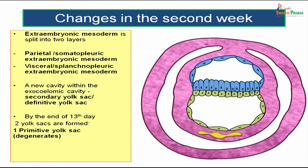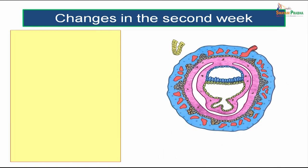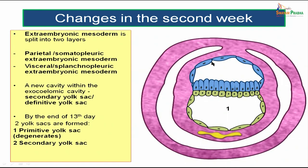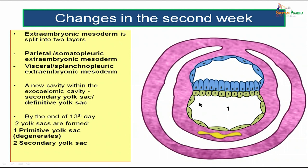By the end of the 13th day after fertilization — we are in the second week — two yolk sacs are formed. One is the primitive yolk sac, which later degenerates by pinching off a larger portion, and the next one formed is the secondary yolk sac or definitive yolk sac.